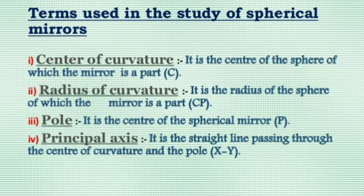Terms related to spherical mirror: First, center of curvature — it is the center of the sphere of which the mirror is a part. Second, radius of curvature — it is the radius of the sphere of which the mirror is a part. Third, pole — it is the center of the spherical mirror, denoted P. Last, principal axis — it is the straight line passing through the center of curvature and the pole, denoted XY.